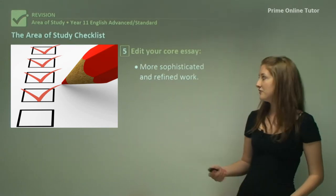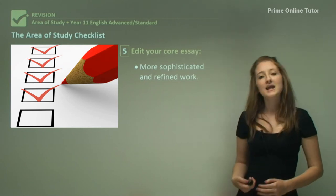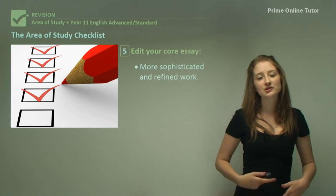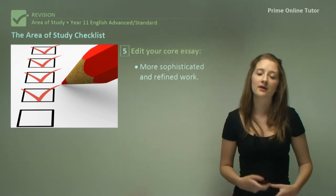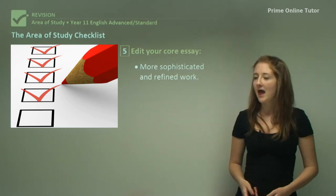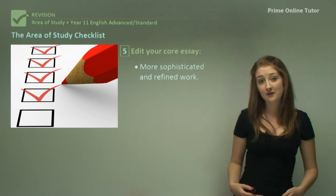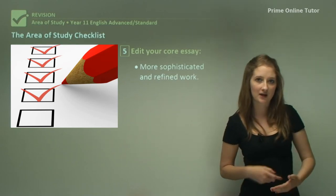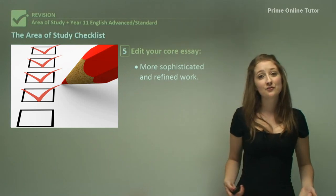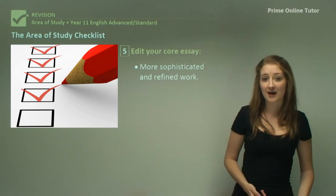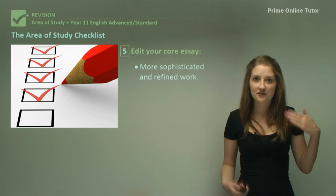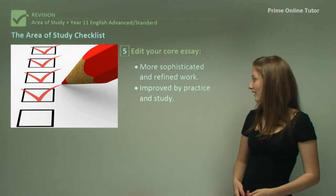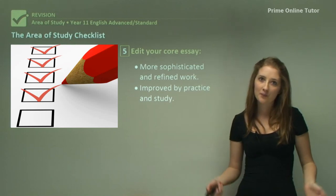The fifth element is to edit your core essay. As you move through this module you're going to be changing your mind about exactly what the area of study means, and as you redevelop your ideas this is going to lead to more sophisticated and refined work. So it's really important that you always update your essay so that it reflects those sophisticated ideas, and this is going to be improved by practice and study.